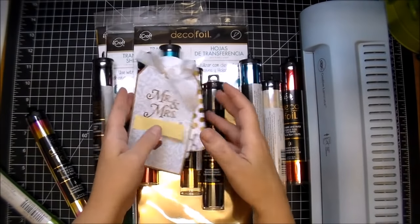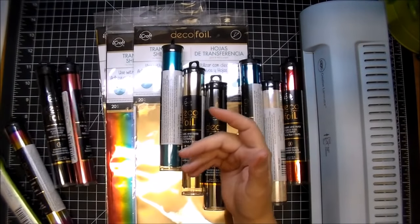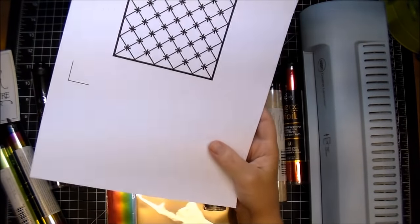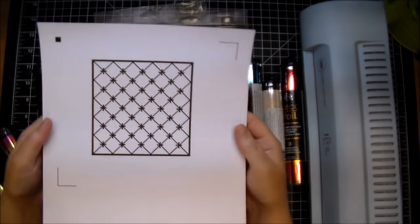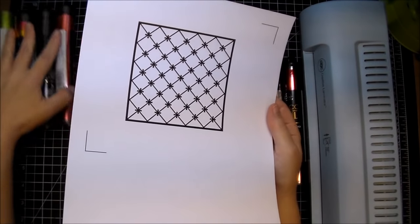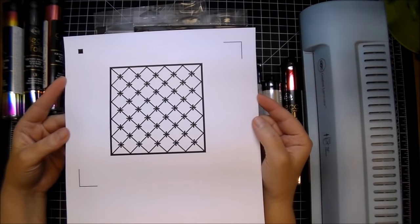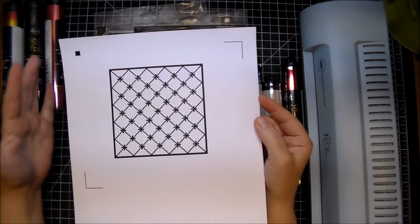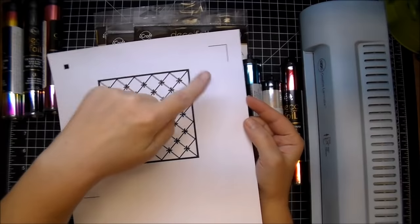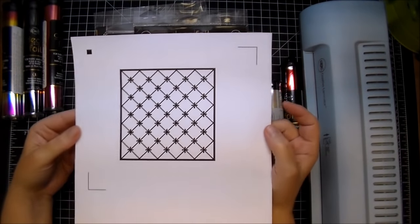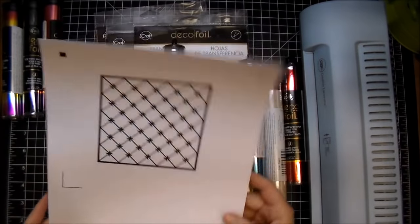So I simply want to show you a couple different things. Here I have printed out, you do not need a Cameo to do this, however you can take it a step further if you do have a Cricut or a Cameo. So I printed this out from my laser printer. Being that I have the registration marks, I'm going to send it through my Cameo and cut it out and then add foil to it.